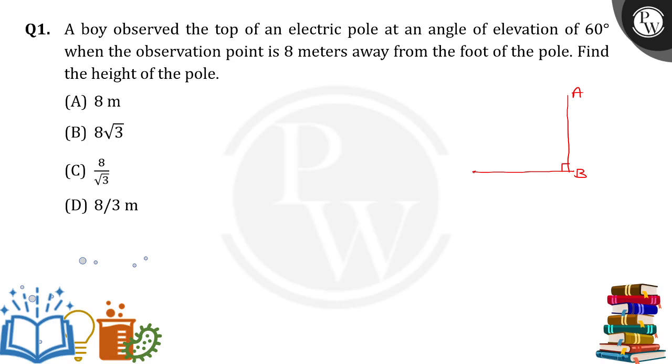And now there is a person, an observer who is at this particular point C, observing the top of the pole. He is observing the top of the pole with an angle of elevation of 60 degrees.